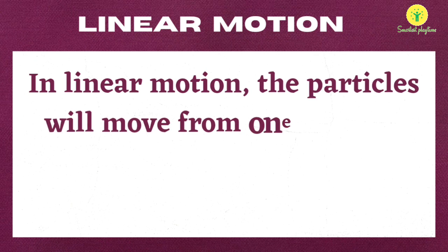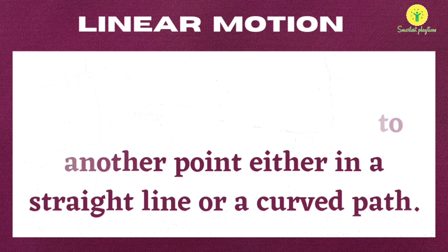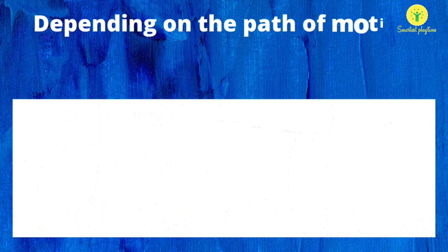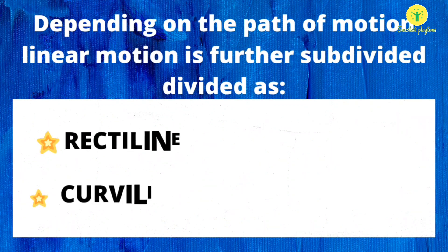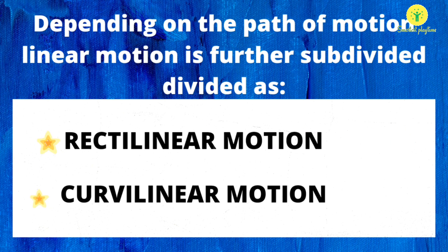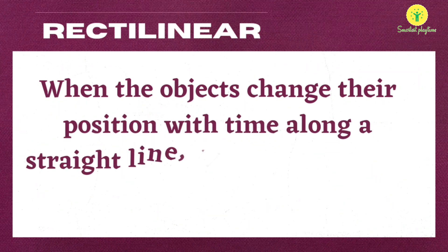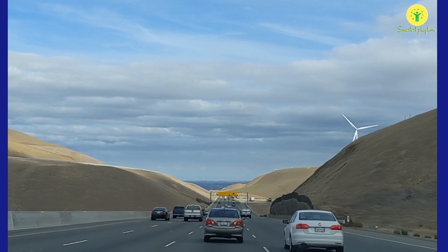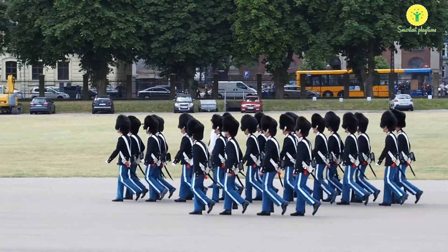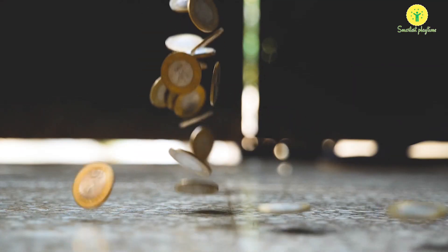Linear motion: when an object moves from one point to another point, either in a straight line or a curved path, that motion is called linear motion. Depending on the path of motion, linear motion is further subdivided into two categories: rectilinear motion and curvilinear motion. When an object moves in a straight line and changes its position along with time, that motion is called rectilinear motion. Moving of vehicles on a straight road, march past of soldiers in a parade, use of elevator in public places, and dropping of coins are examples of rectilinear motion.